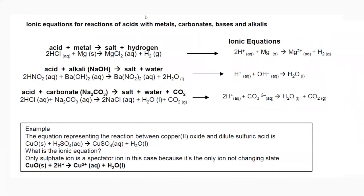To summarize writing ionic equations for different reactions: for acid with metal giving salt and hydrogen, cancel the common chloride ions. We're left with two hydrogen ions plus magnesium solid giving magnesium ion plus hydrogen gas. Write solids, liquids, and gases as they are; for ions, cancel the common ones and keep the remaining.